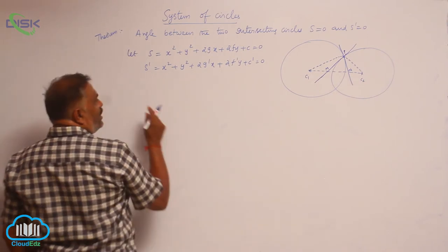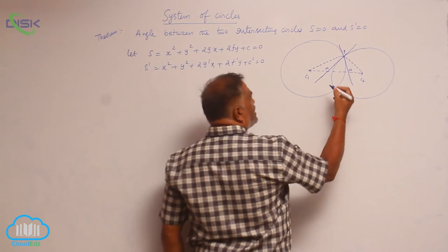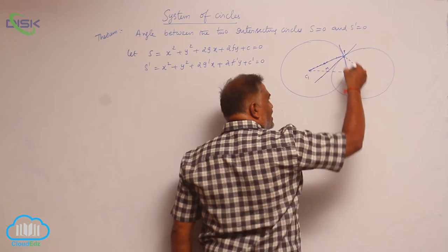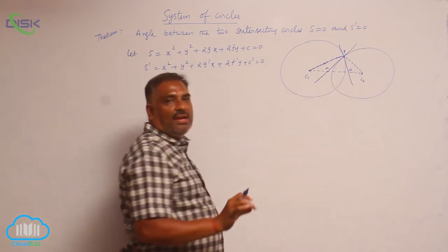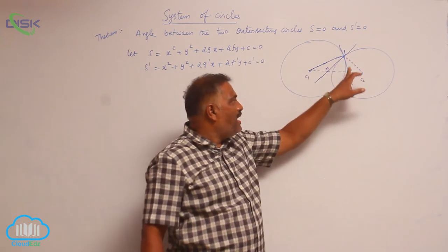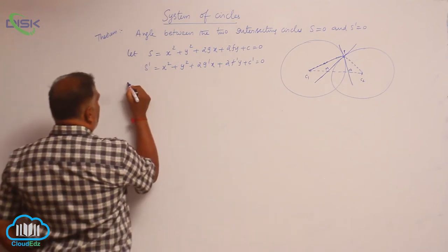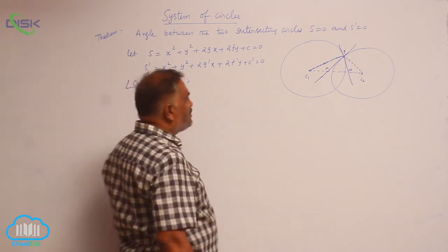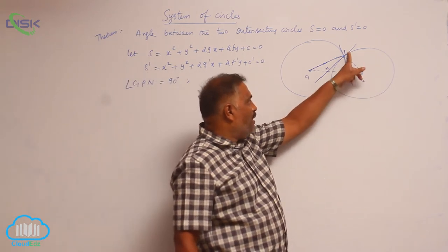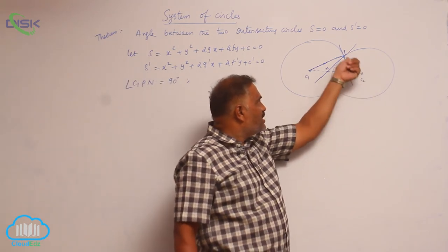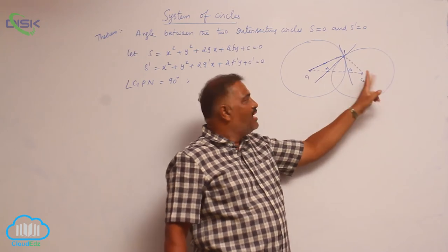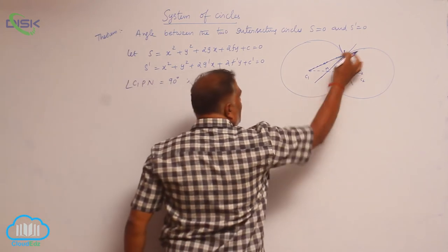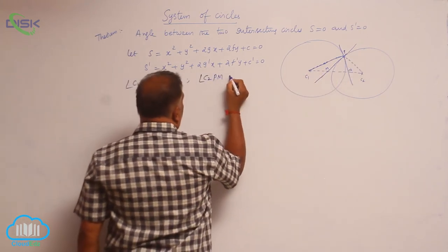Now we will calculate the angles. The line c1P is the radius and PN is the tangent, so angle c1PN = 90 degrees. Similarly, c2P is the radius of the second circle, and radius is perpendicular to tangent, so angle c2PM = 90 degrees.